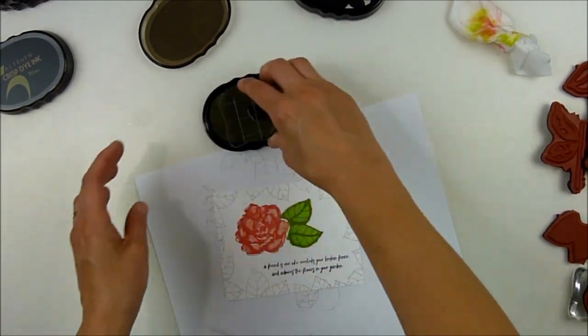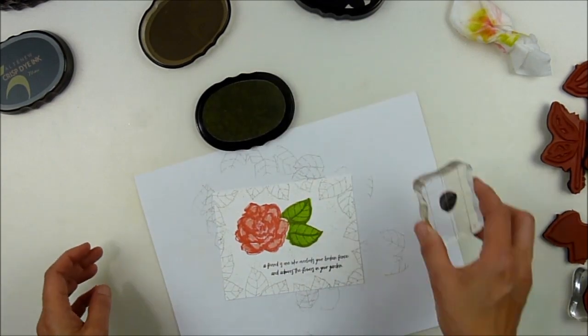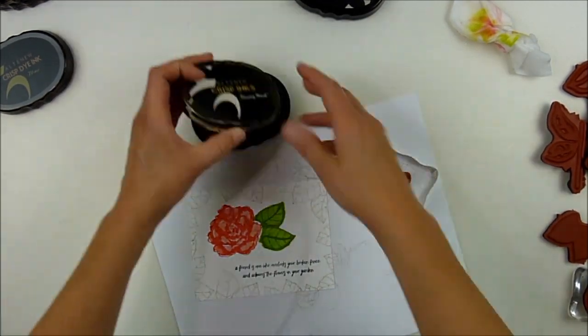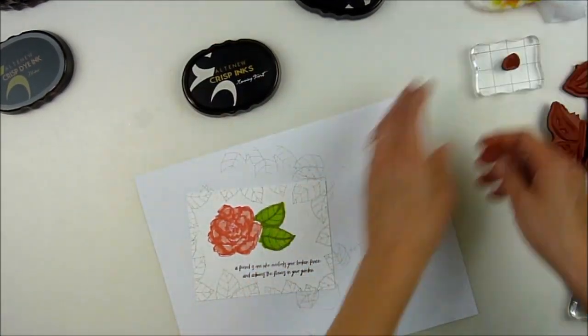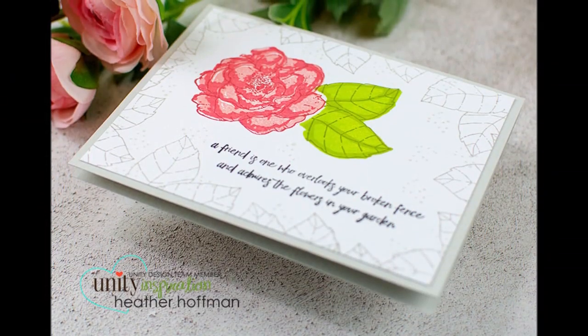It's a little hard to see on the video, but you'll be able to see it on the finished card. It just adds, it's almost like ink splatters without adding the ink splatters. And then I mounted it on a soft gray card base to finish it off.